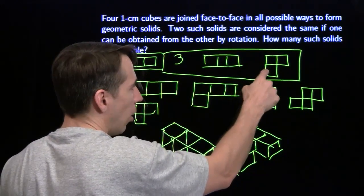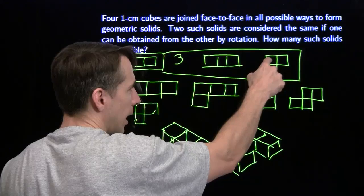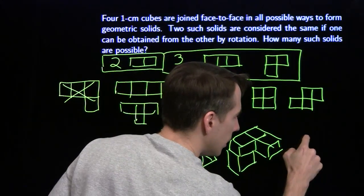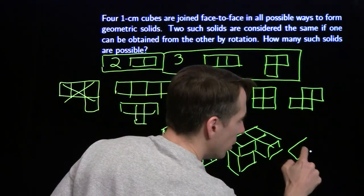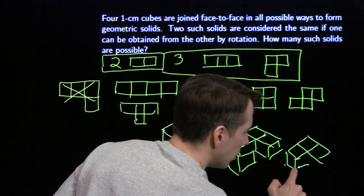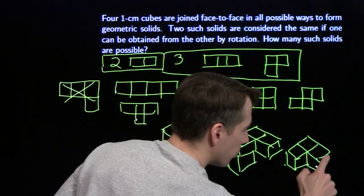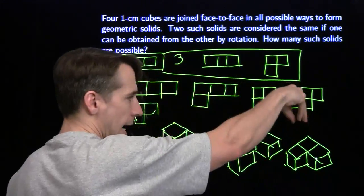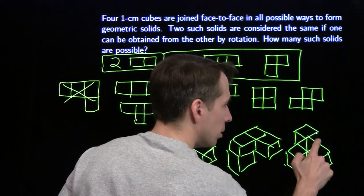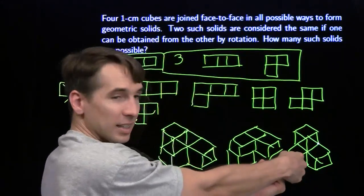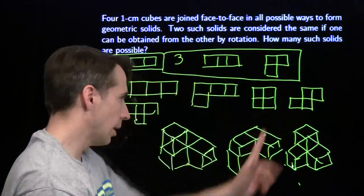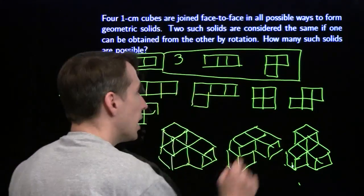So we've thought about all the ways to add one cube to the straight three-cube piece. Now adding to the L-shaped piece's corner: if I add there or there I get pieces already found. If I stick it right on top, I get a new 3D piece we haven't seen yet. And if I add it in the back, I get this same new piece.